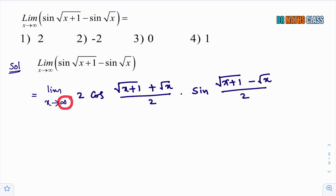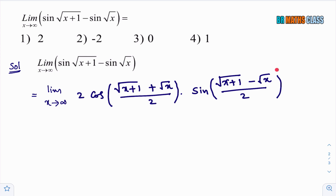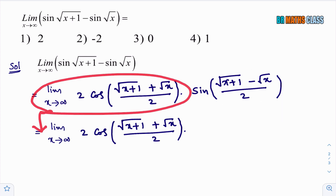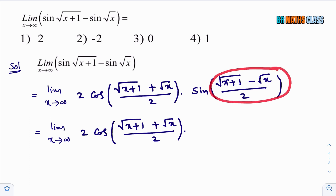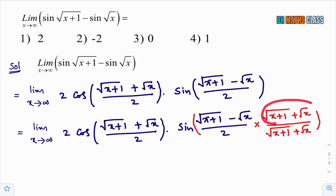What you need to observe here is that this is a very large value and we don't know what its value is. When you substitute x equals infinity in this, you don't get any idea how to proceed further. So what I'll do — I'll simplify this part by rationalizing the numerator. You multiply the numerator and denominator with root over (x plus 1) plus root x.